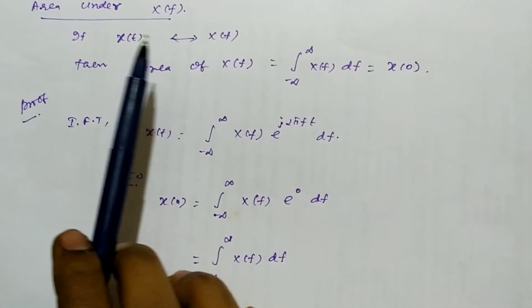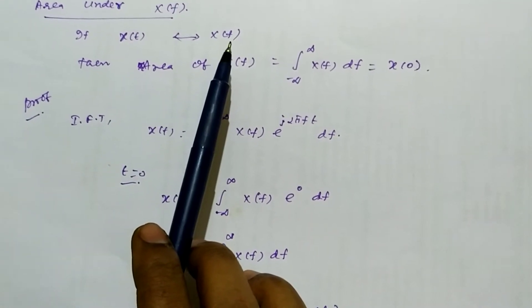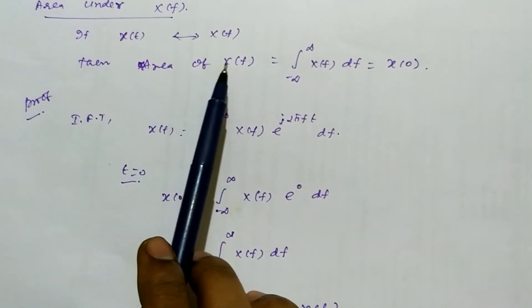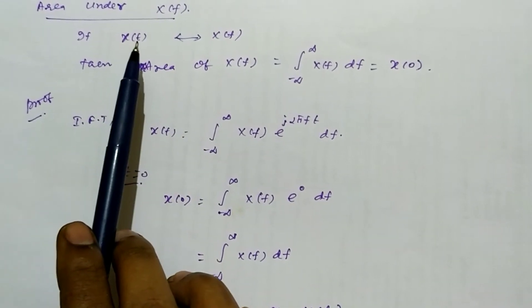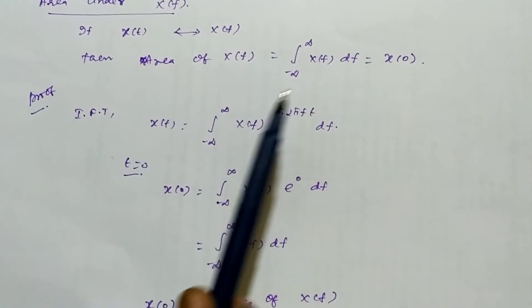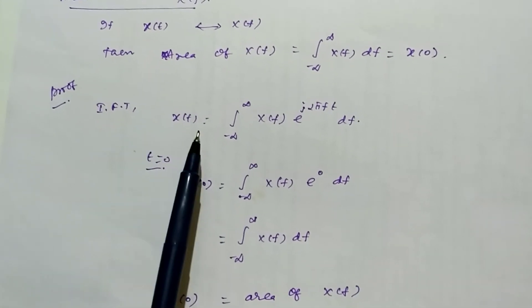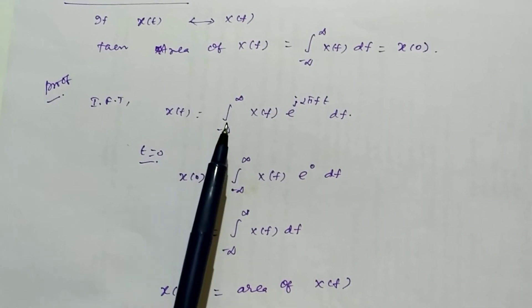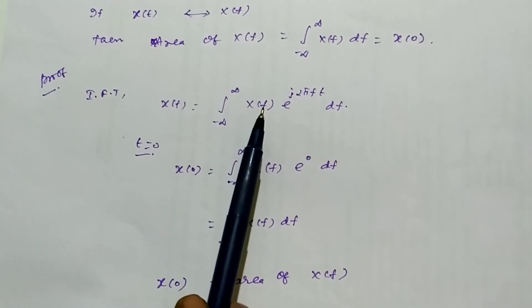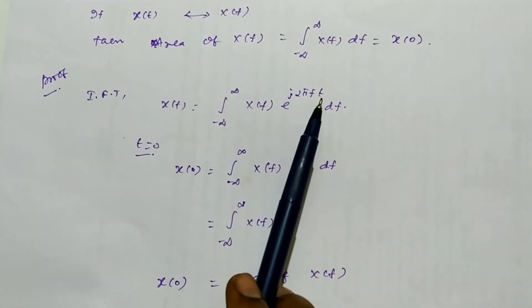Here again, x(t) is a given time signal whose Fourier transform is known as X(f). To find the area of X(f), we use the inverse Fourier transform. The inverse Fourier transform formula is: x(t) equals the integral from minus infinity to plus infinity of X(f) e to the power of plus j 2 pi f t, df.